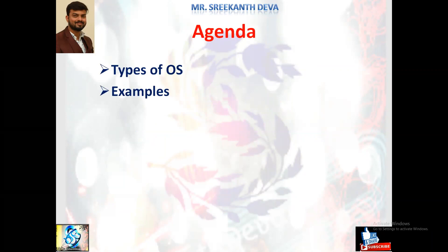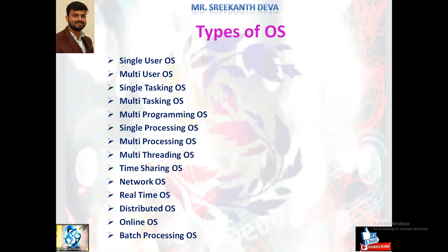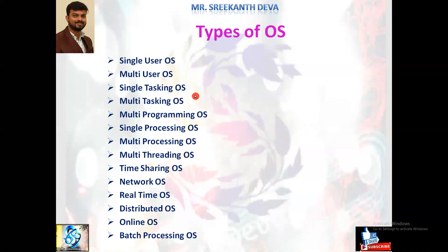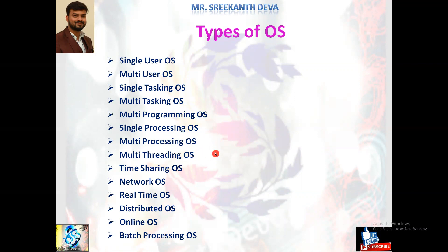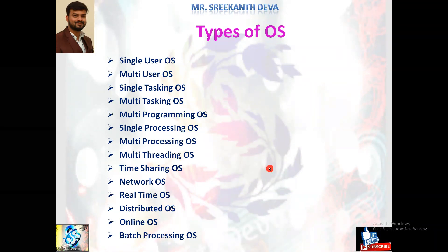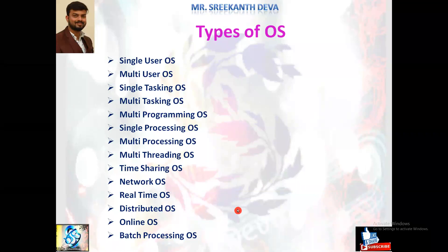The agenda of this session is about different types of operating systems: single user, multi-user, single tasking, multitasking, multi-programming, single processing, multi-processing, multi-threading, time sharing, network, real-time, distributed, online, and batch processing operating systems.